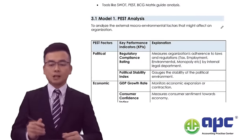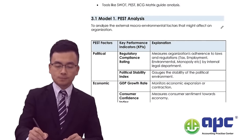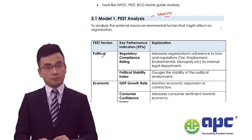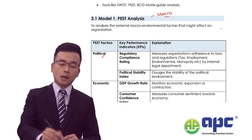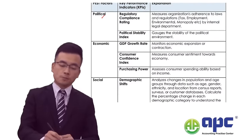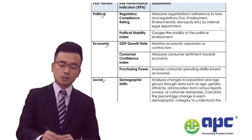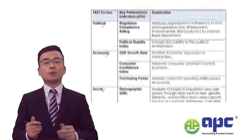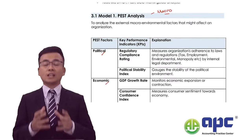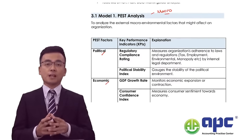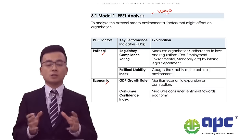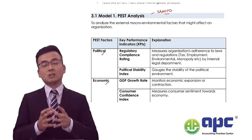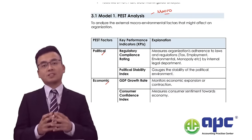If you were to analyse the macro environment that the business is facing — related to actions from the government — from the political point of view, the economic point of view, social tastes, and the technological point of view — these are factors related to the macro environment. Any of these factors changing will certainly affect all companies in the market. To summarise using the first letters, we have the PEST analysis.